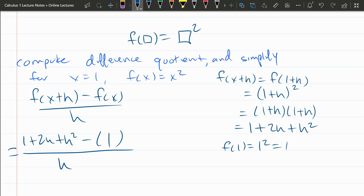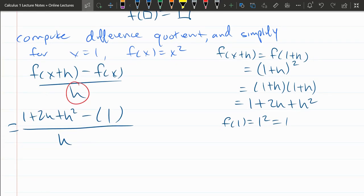This is the difference quotient, but I have not simplified it yet. Whenever you're doing a difference quotient problem, you do need to simplify it. You know it's simplified when you've canceled this h in the denominator. Think about this h as really the one you need to get rid of.